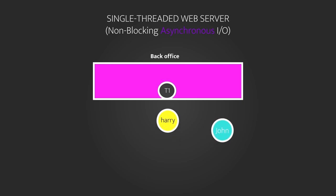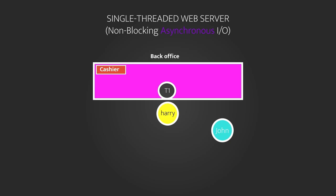So if Harry wants to withdraw money, he goes to the teller who is processing John's request. The teller takes the withdrawal request and, instead of processing it directly, hands it over to the cashier. When the teller is told the task is complete, the result is passed back to the visitor who made the request. This approach means the bank doesn't need several tellers always on hand. This model isn't infinitely scalable, but it's more efficient — you can do more with fewer resources. This is what we call asynchronous non-blocking architecture.